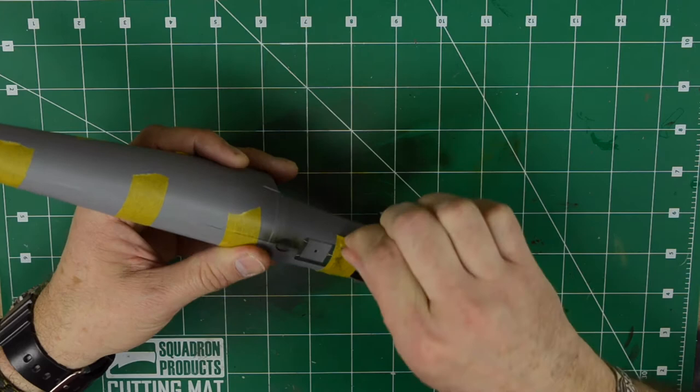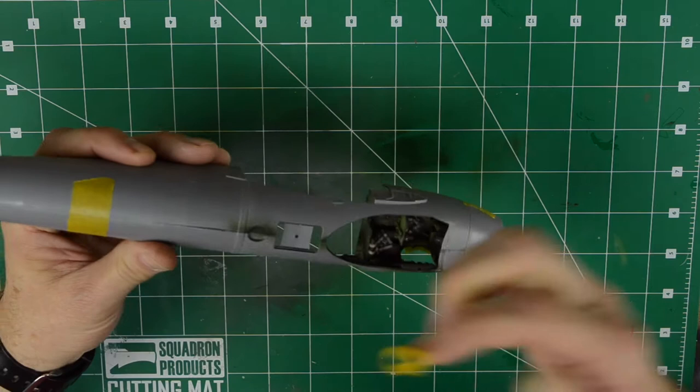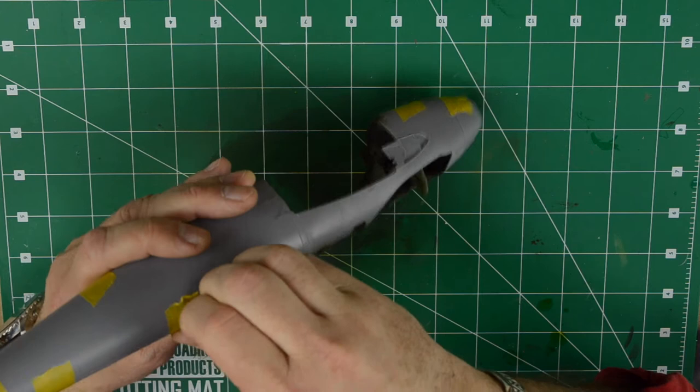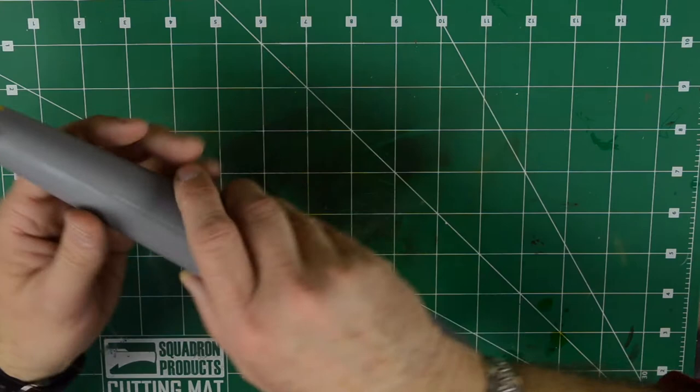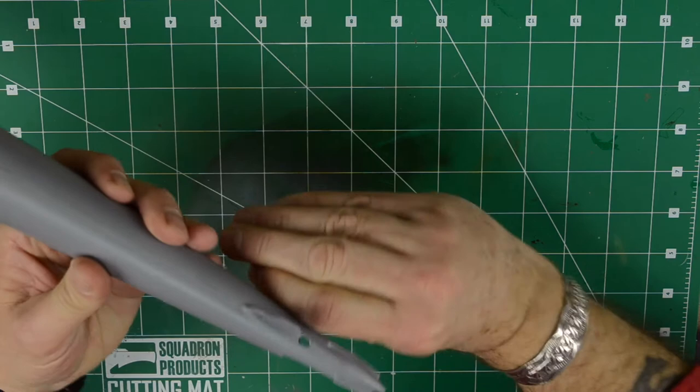First of all, of course, we take the tape off. I use the yellow model masking tape but honestly any painter's masking tape will work. The good thing about the Mosquito or Tamiya's Mosquito is that it fits really well.